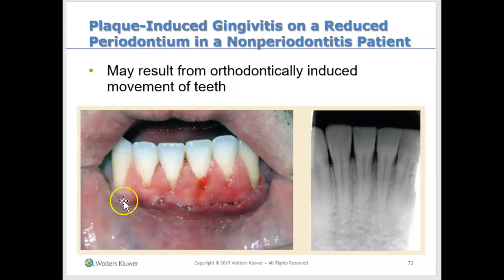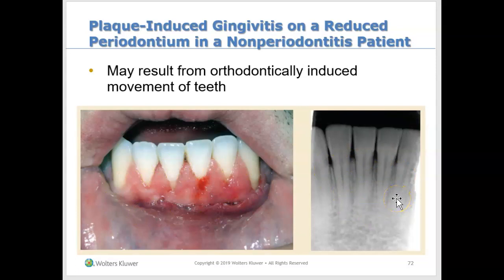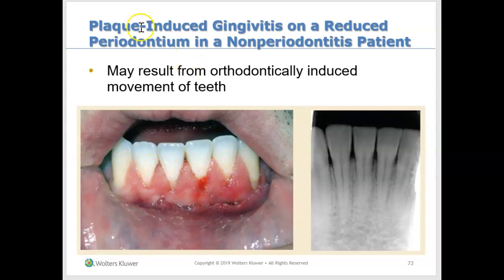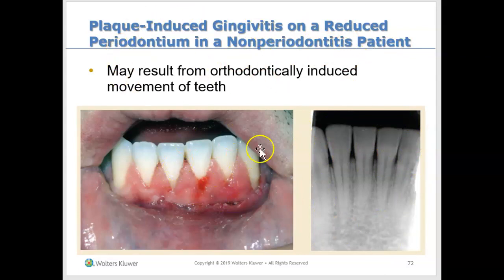Here we do see gingivitis and inflammation, but we cannot say this person has periodontitis because when we look at the bone, it has not receded or gone down. So this person does not have periodontitis — they have gingivitis. What might throw you off is the recession, but when you get their history they may confirm they had braces, which caused it. This person fits the category of gingivitis on a reduced periodontium in a non-perio patient with no bone loss.